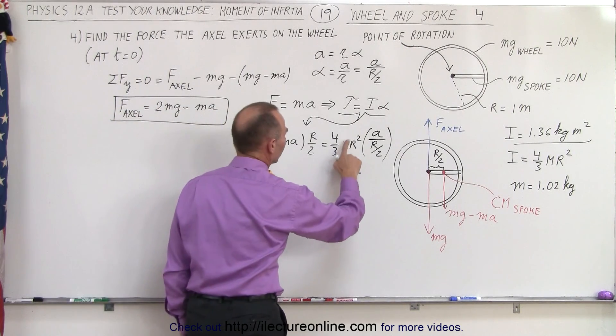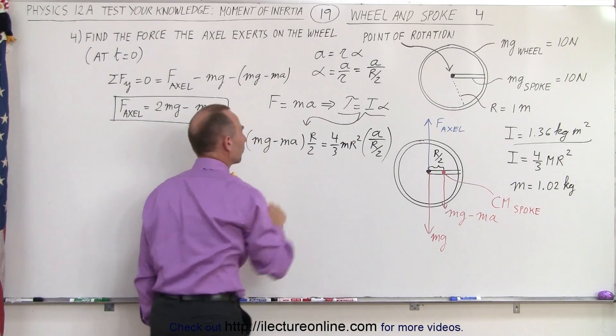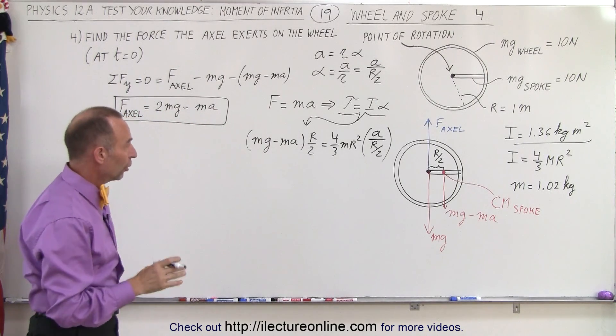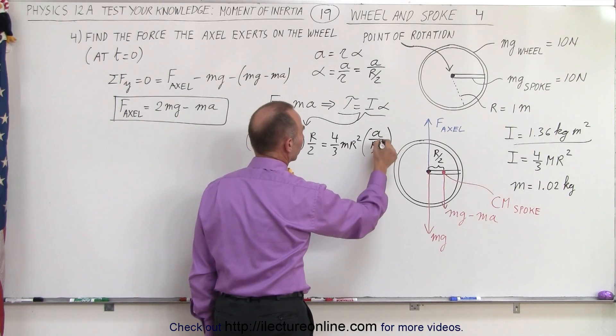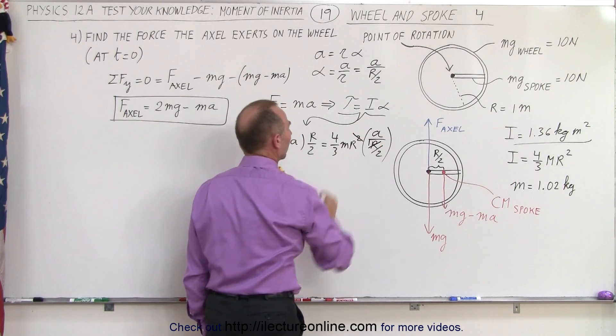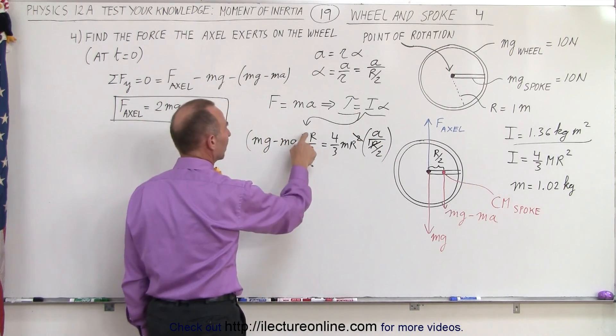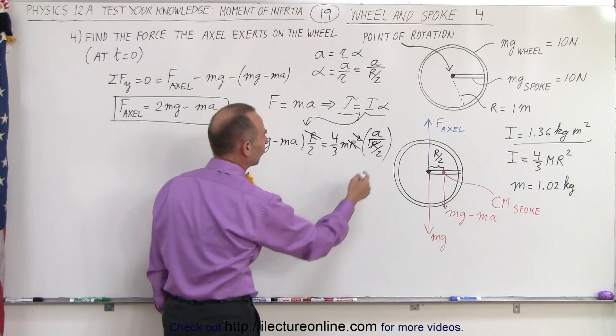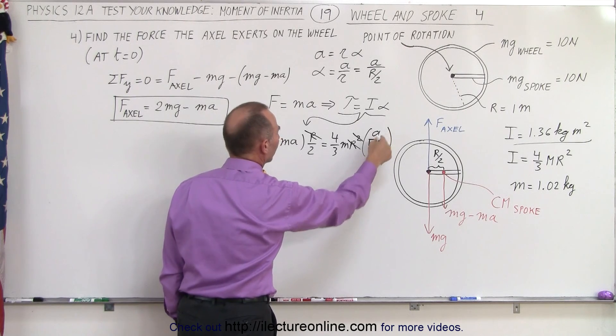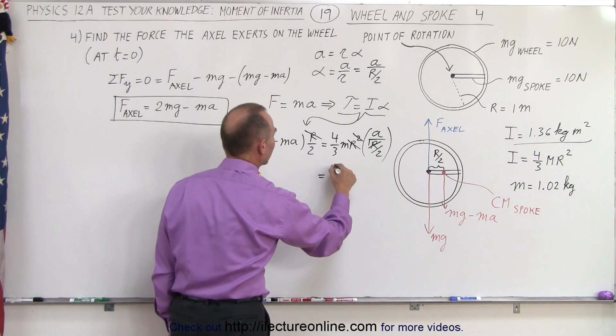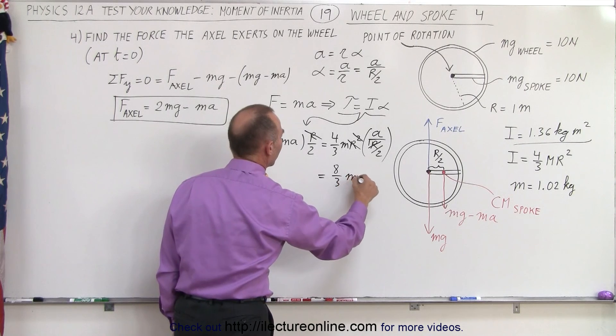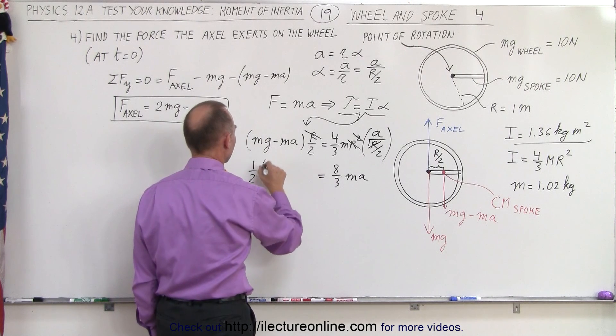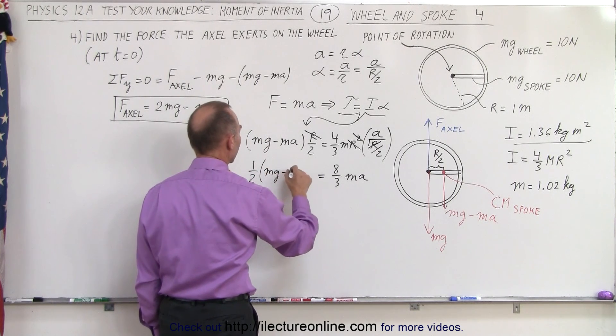And this, of course, should be a small m to make it look like it's the same as this m over here. Well, first, let's cancel out the r's. We have an r squared here, we have an r in the denominator here, so that cancels out, becomes a 1, and this goes away. And then we have an r on the left side, an r on the right side, so that cancels out as well. So let's see what we have so far. The 2 goes to the top, so this becomes 8/3. On the right side, we have 8/3 ma, and on the left side, we have 1/2 times mg minus ma.